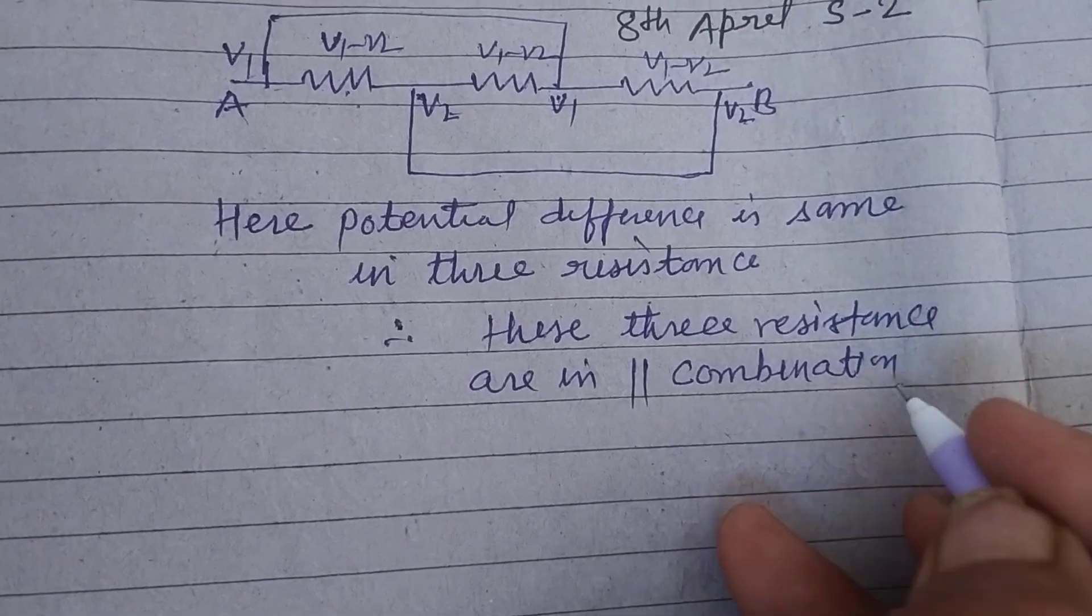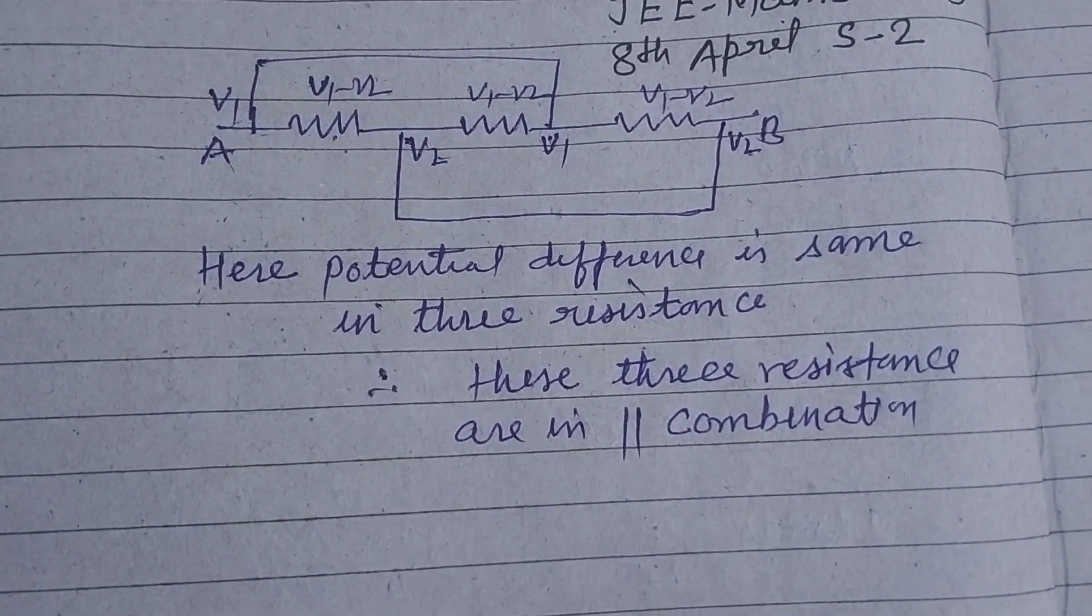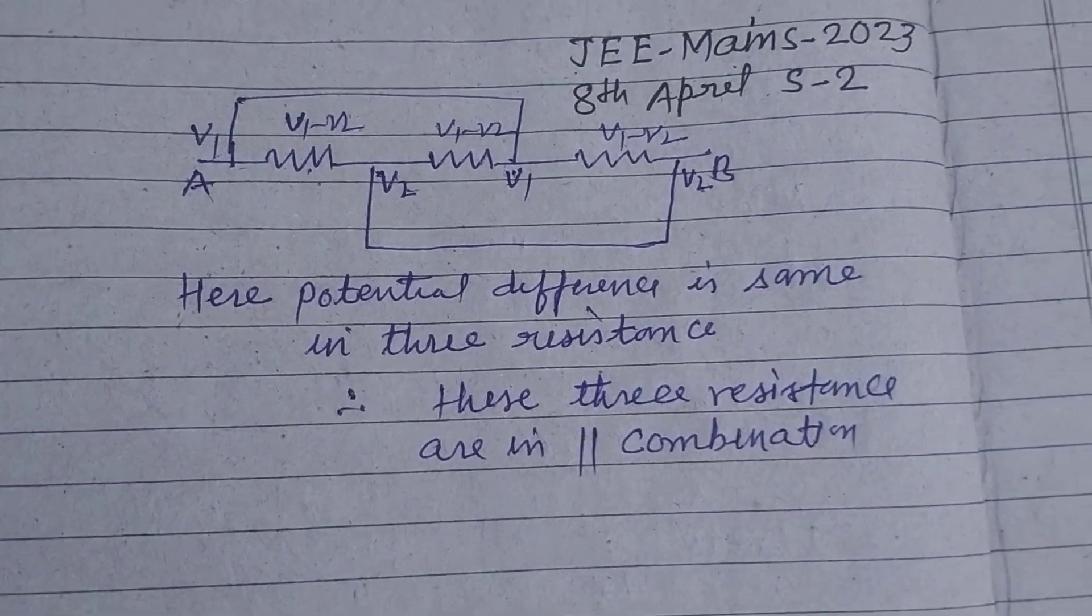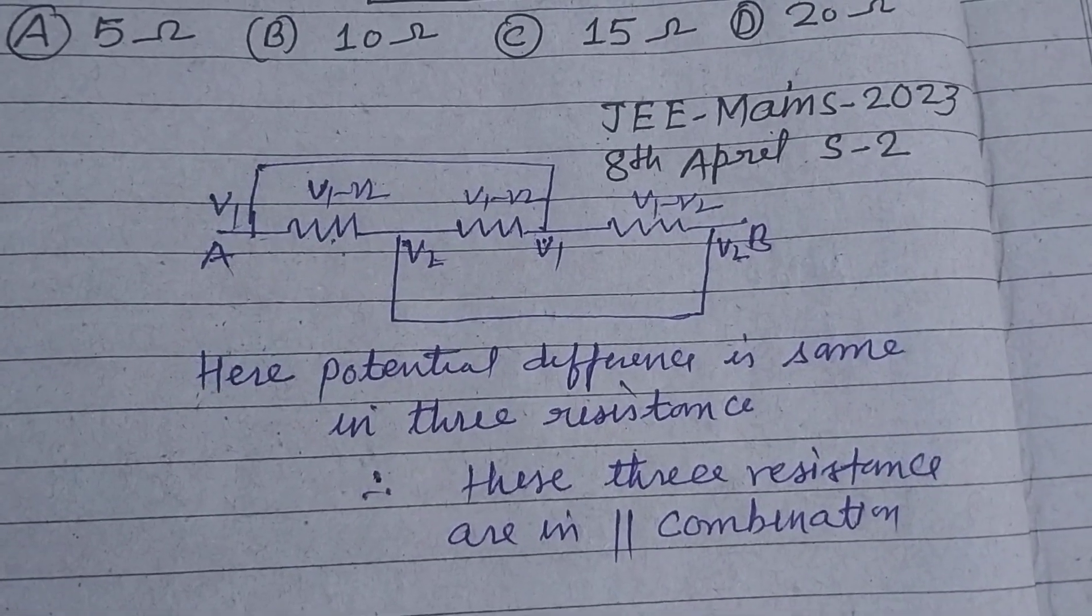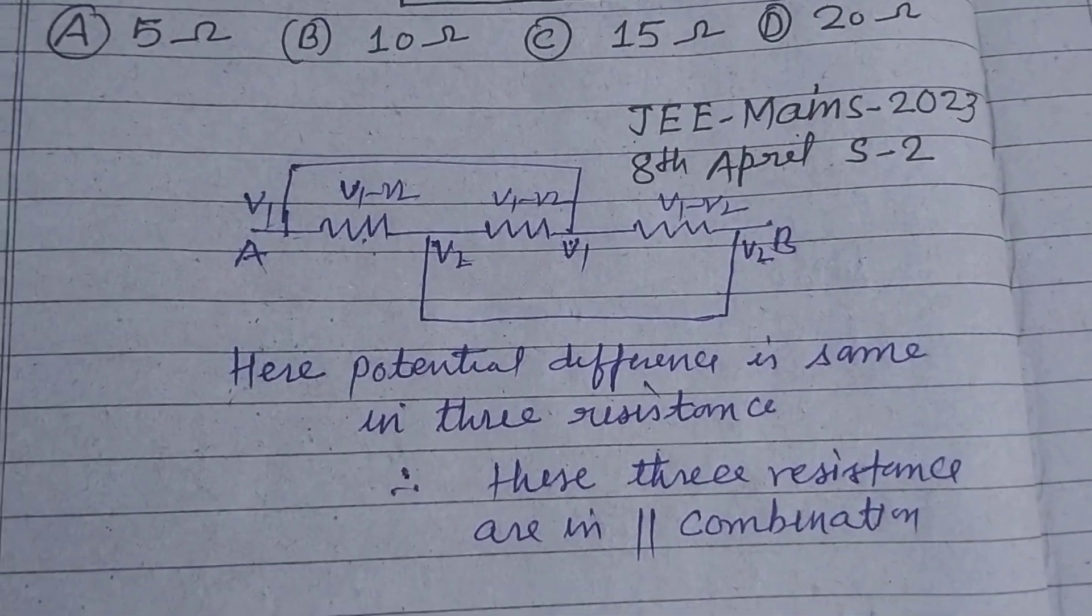You know that when the potential is same, it's a parallel combination, while current is same in series combination.